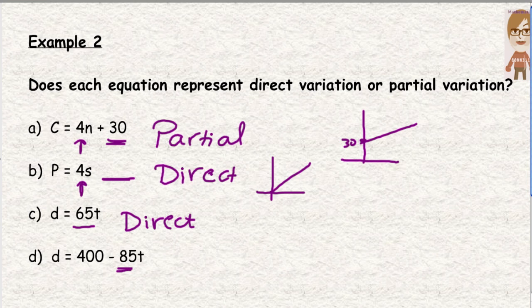This one, the rate is negative 85. Just because the 400 comes first, that doesn't mean that the 400 is a rate. The 400 is a number that is all by itself. It doesn't have a variable beside it. So that is an initial value or a flat fee. And the rate is $85 or we're not quite sure because it doesn't explain that. But this then would be partial variation because this line would start at 400. And instead of going up, the line would go down because it's negative 85.